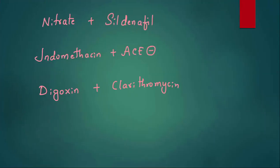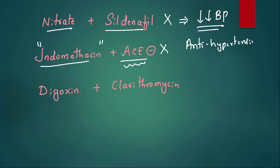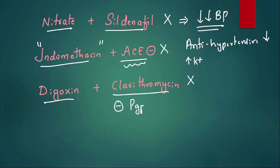Some important drug interactions: Nitrates and sildenafil together cause severe hypotension — do not combine them. Indomethacin with ACE inhibitors blunts the antihypertensive effect and both together increase potassium levels. Digoxin with clarithromycin is dangerous because clarithromycin inhibits P-glycoprotein, causing an increase in digoxin levels — since digoxin has a narrow therapeutic index, even a small increase causes toxicity.